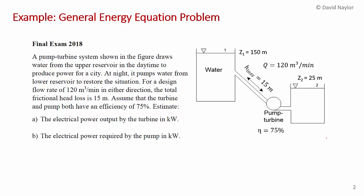We do this even in Ontario where there's an installation on the escarpment where we pump water up the escarpment from Lake Ontario to store energy, and then we run it back down through a turbine to generate electricity at times of high demand. The problem states a pump-turbine system draws water from an upper reservoir in the daytime to produce power for a city, and then at night a pump pumps water from the lower reservoir up to the upper reservoir to restore the situation.